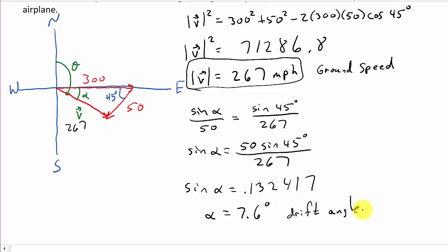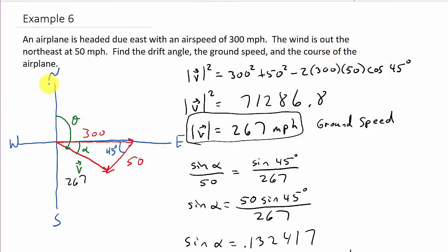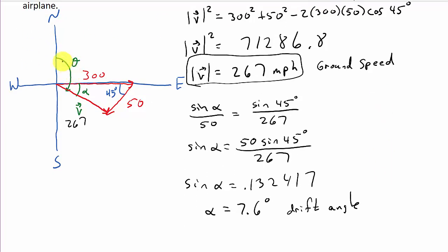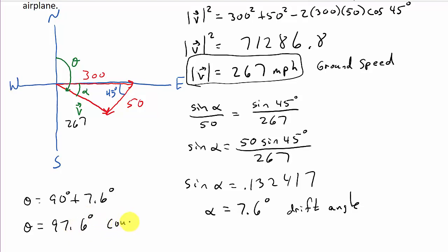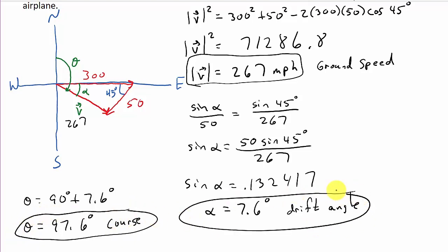Now I need to find the course of the airplane, which is theta. That's 90 plus alpha. So theta equals 90 degrees plus the drift angle of 7.6 degrees, giving theta equals 97.6 degrees — and that is the course of the plane. So there's everything they asked us to find. I'll have some more like this — check out my other videos, give me a like, share, and subscribe. Thanks for watching.